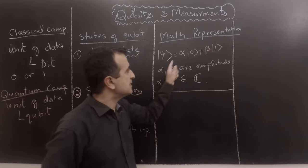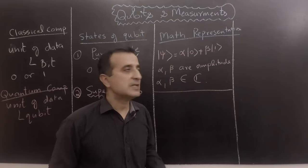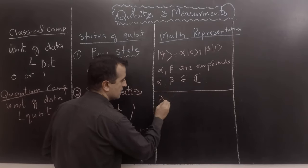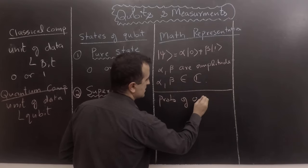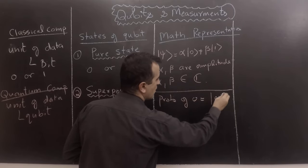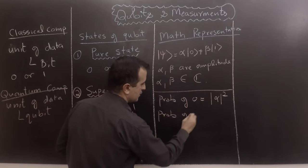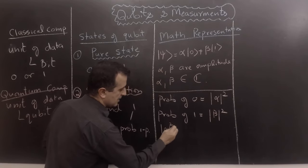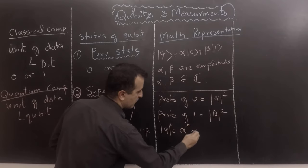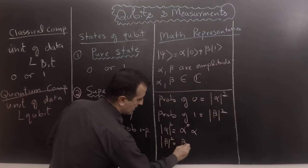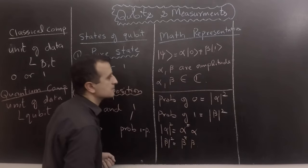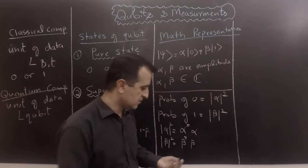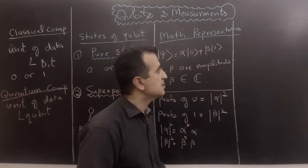We know the basic definition of qubit and that alpha and beta are complex numbers. The probability that the qubit takes value 0 is equal to |alpha|², and the probability of 1 is equal to |beta|², where |alpha|² is defined as alpha-conjugate times alpha, and similarly |beta|² is beta-conjugate times beta. Since the sum of probabilities is always equal to 1, we have |alpha|² plus |beta|² equals 1. This is called the normalization constraint.